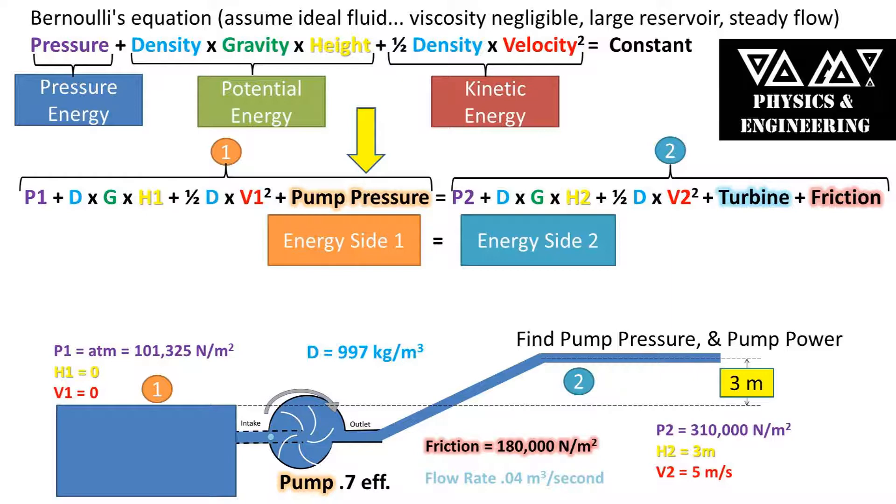In the new version of this equation, the pumping energy is added to the first side of the equation being that the pump is adding energy to the fluid before it reaches point two. The friction energy and the turbine energy is added to point two because it is taking away from the total energy at point one before it is reaching point two. Just like previous problems, we assume that the energy is conserved, so the energy on the first side of the equation equals the energy on the second side of the equation.